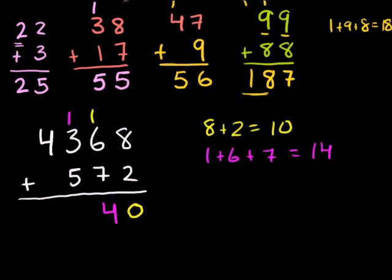Now we have, let me do it in another color. I'll do it in pink. We have 1 plus 3. We're in the 100's place now. Plus 5. 1 plus 3 plus 5. Well 1 plus 3 is 4. 1 plus 3 is 4. Plus 5 is 9. 4 plus 5 is 9, so this is going to be equal to 9.